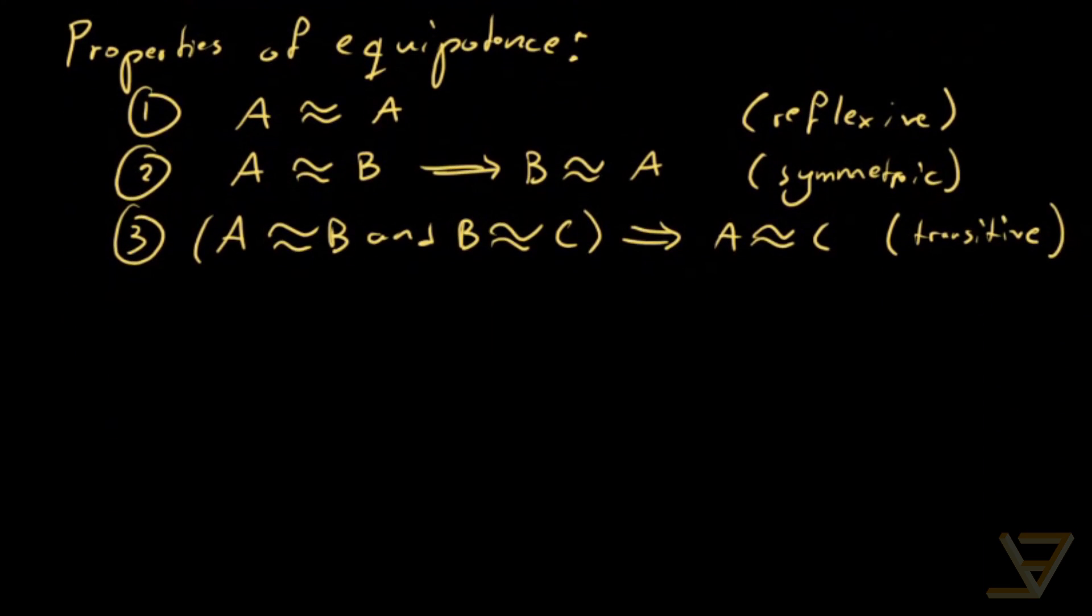And these come up quite frequently. For example, if A is equipotent with B, and you know that B has cardinality N, then the cardinality of A is also equal to N. That's called the bijection principle.